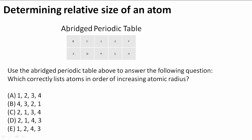Determining relative size of an atom. Use the abridged periodic table above this periodic table to answer the following question. Which correctly lists atoms in order of increasing atomic radius?